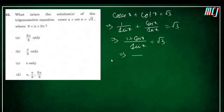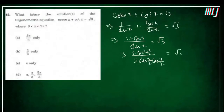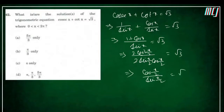Using half-angle formulas: 1 + cosx = 2cos²(x/2) and sinx = 2sin(x/2)cos(x/2). So the equation becomes 2cos²(x/2) / [2sin(x/2)cos(x/2)] = √3, which simplifies to cot(x/2) = √3.